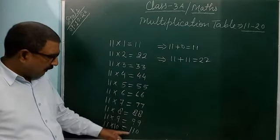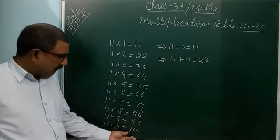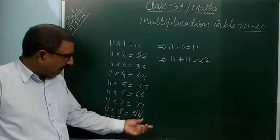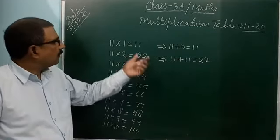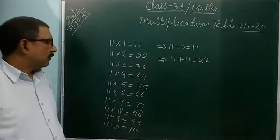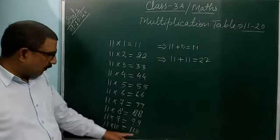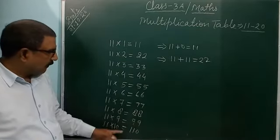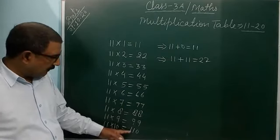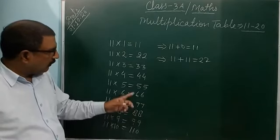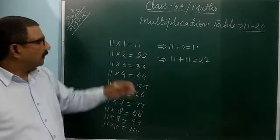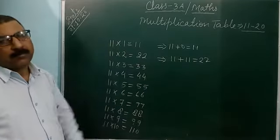You can see here — it is given as 10, 9, 8, 7, 6, 5, 4, 3, 2, 1. So if you are using 0, 9 — like that also you can write this. And if you are using 11, 9, 8, 7, 6, 5, 4, 3, 2, 1 — in this way also you can write the table of 11.